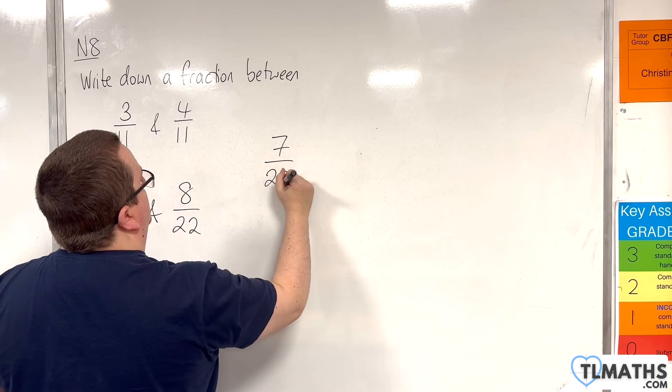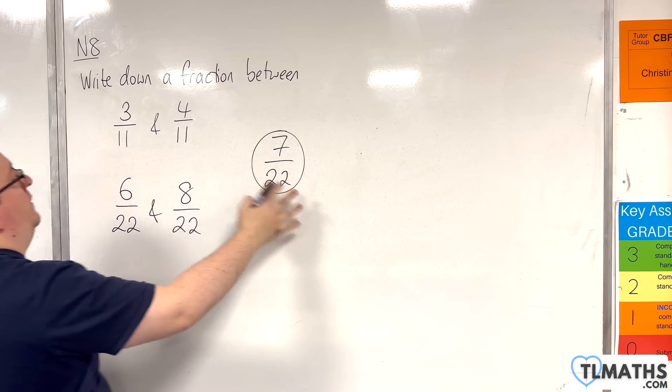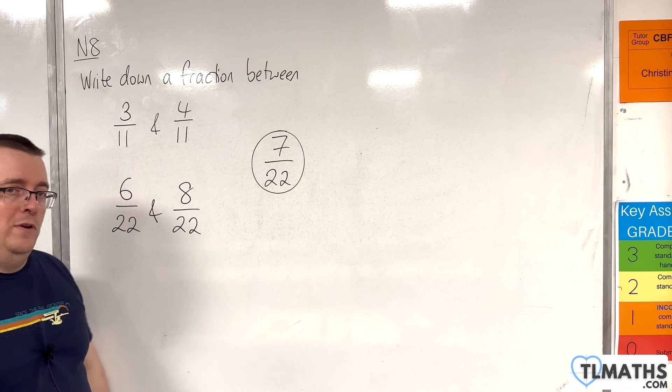So, 7 over 22 is a fraction that lies between 3 elevenths and 4 elevenths.